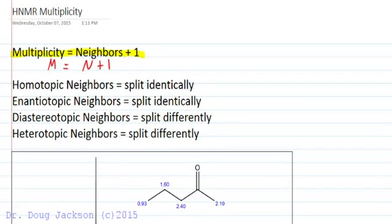Let's do a quick review of multiplicity in proton NMR. We have four different types of neighbors. Multiplicity is going to be equal to N plus one, but we have four different types of neighbors. Homotopic and enantiotopic — both of these are going to split identically to one another for their neighbor. Diastereotopic and heterotopic are going to split differently.